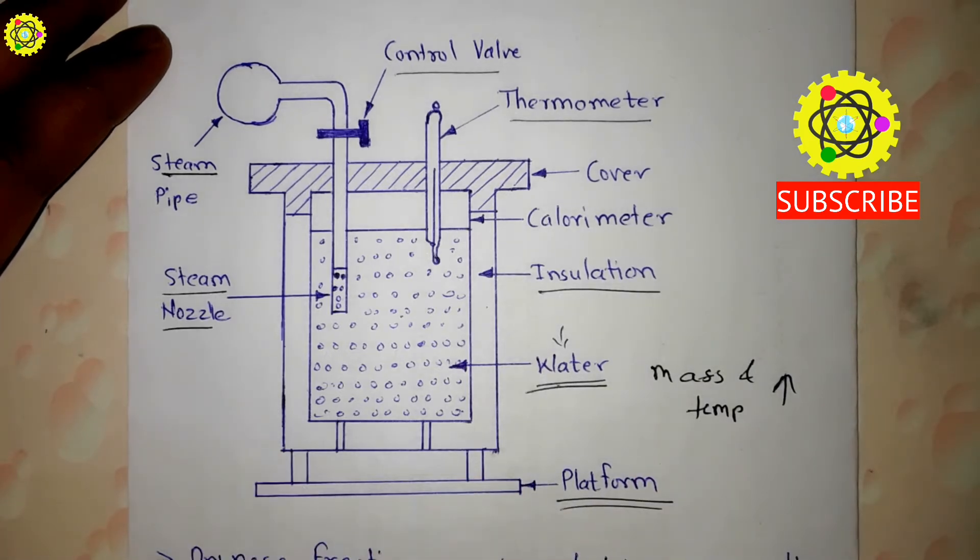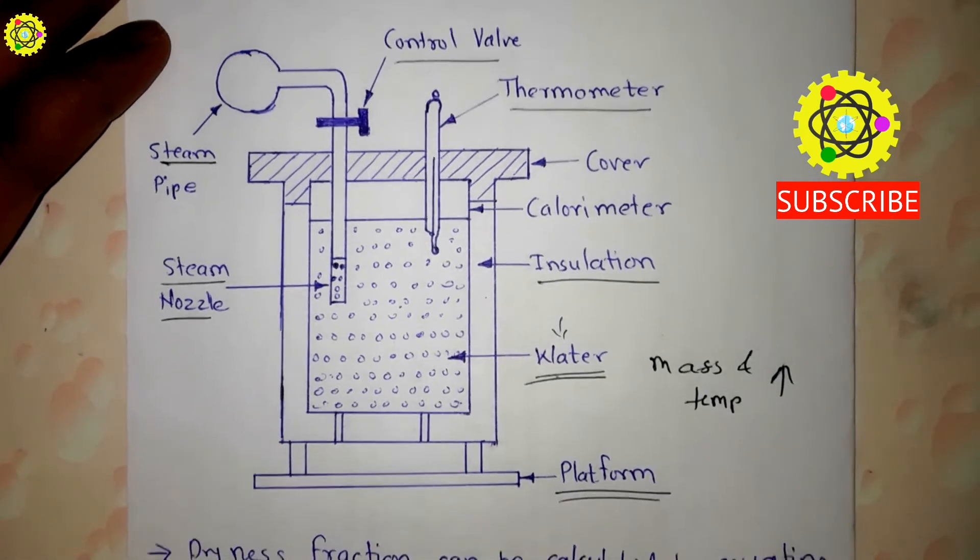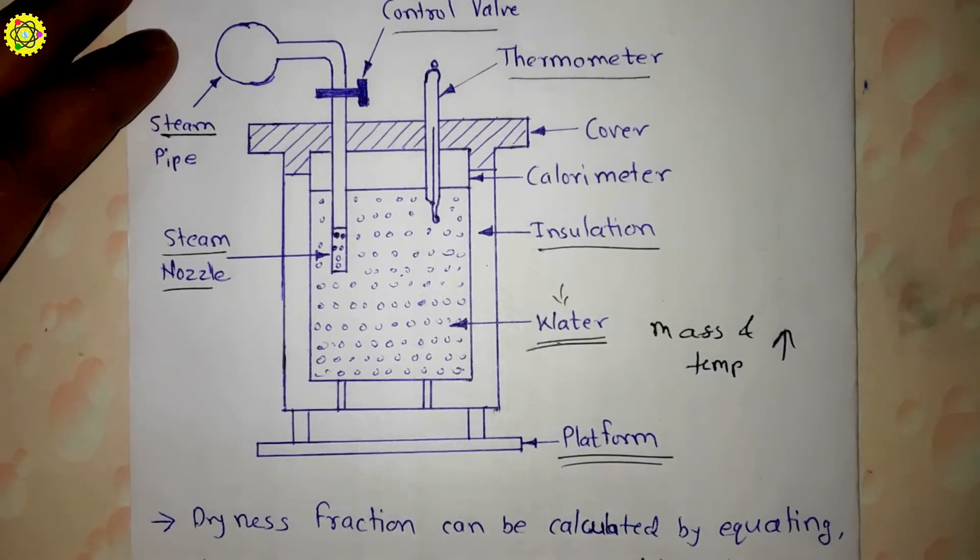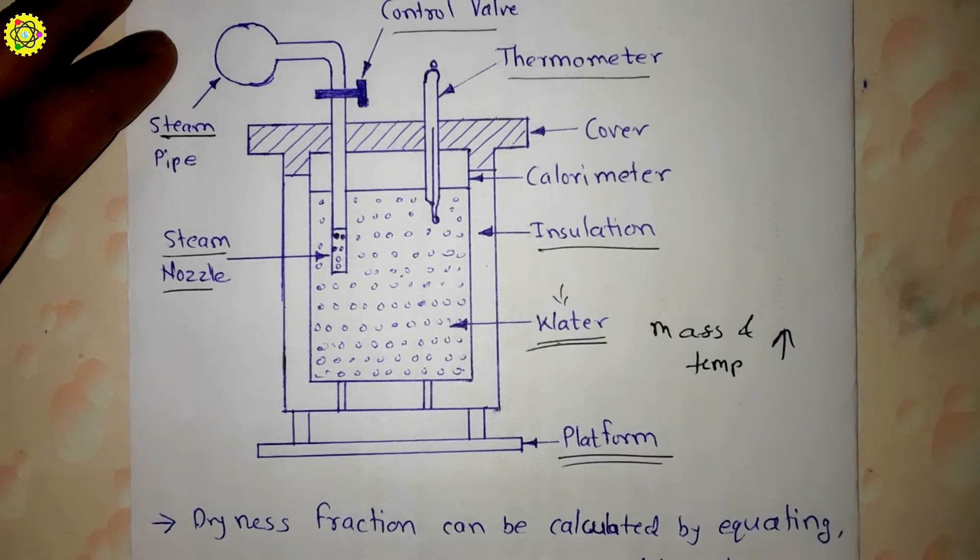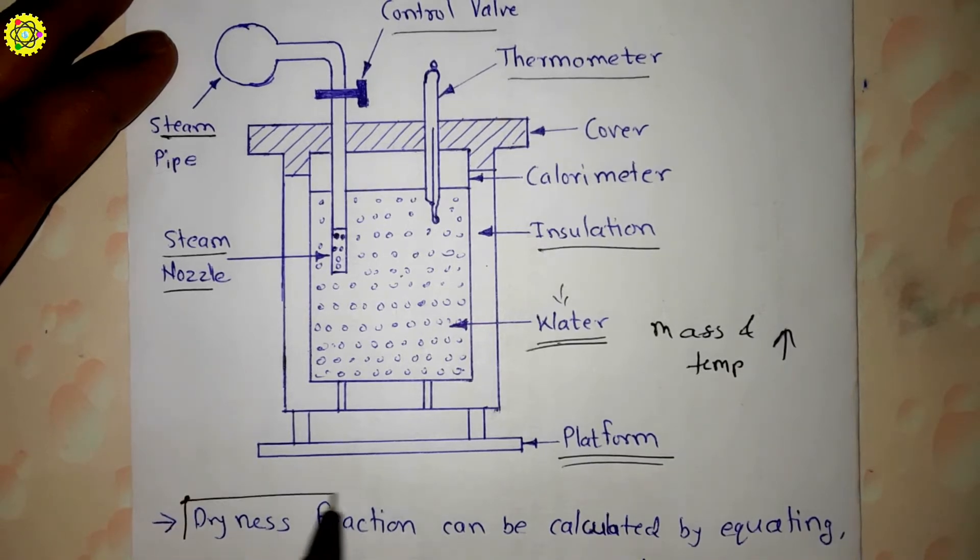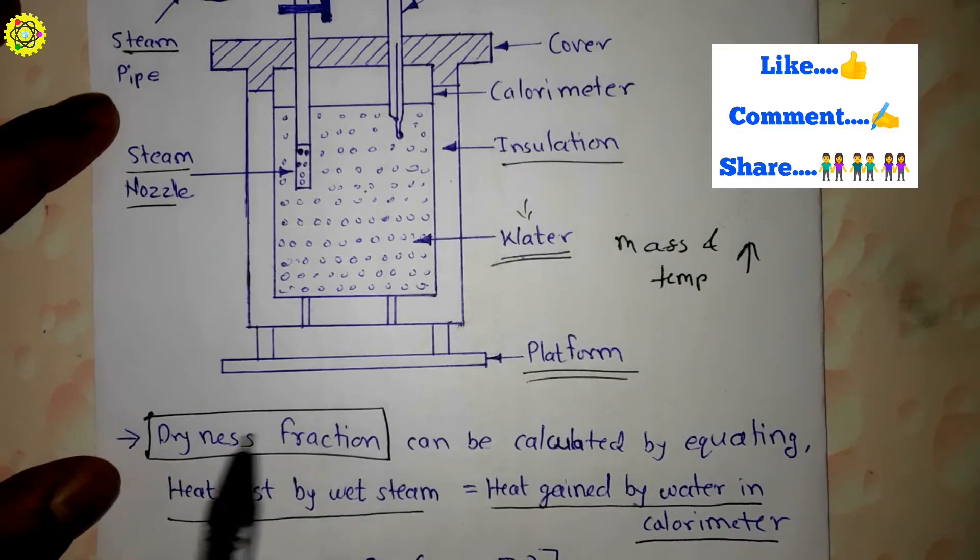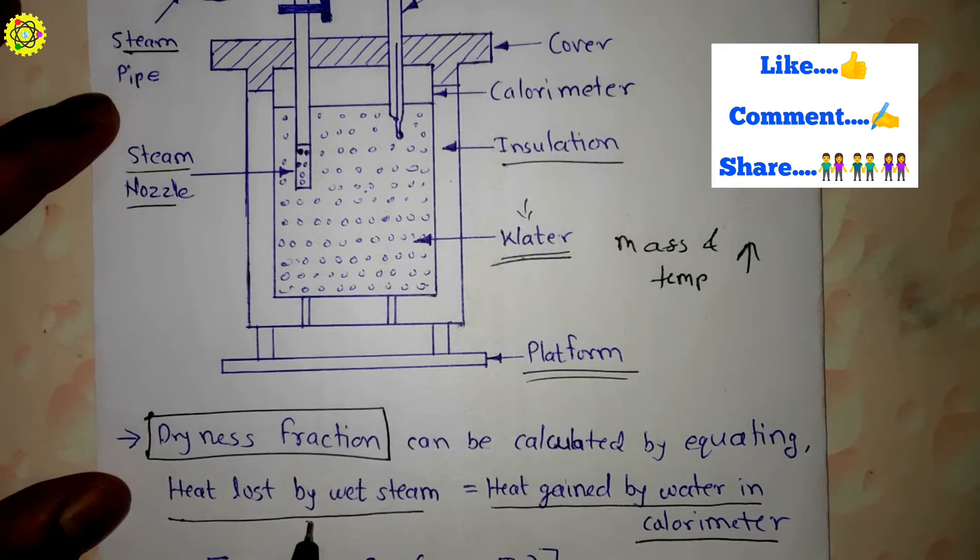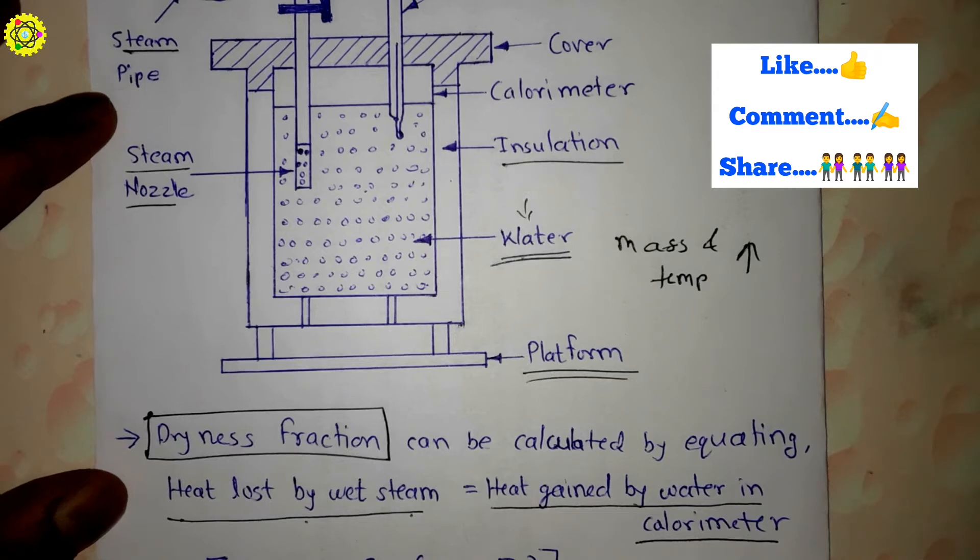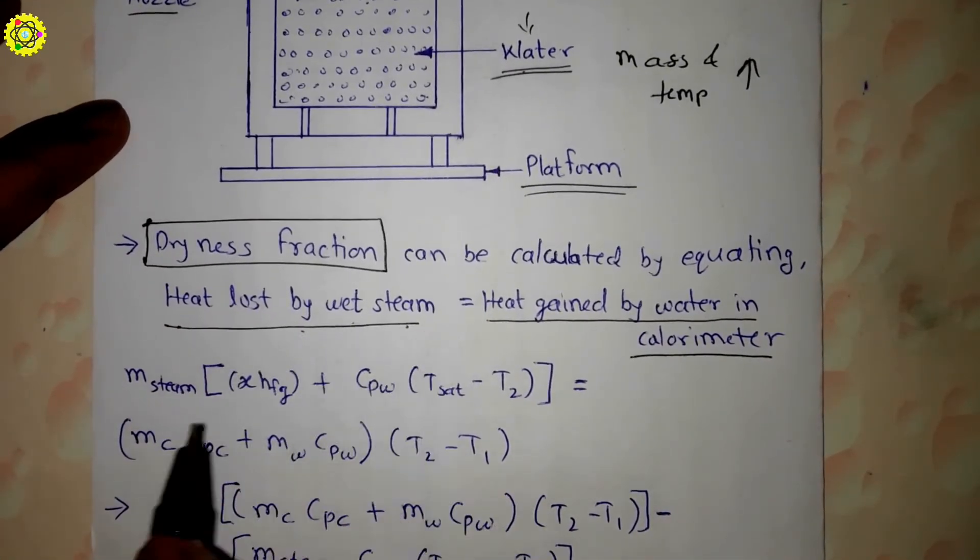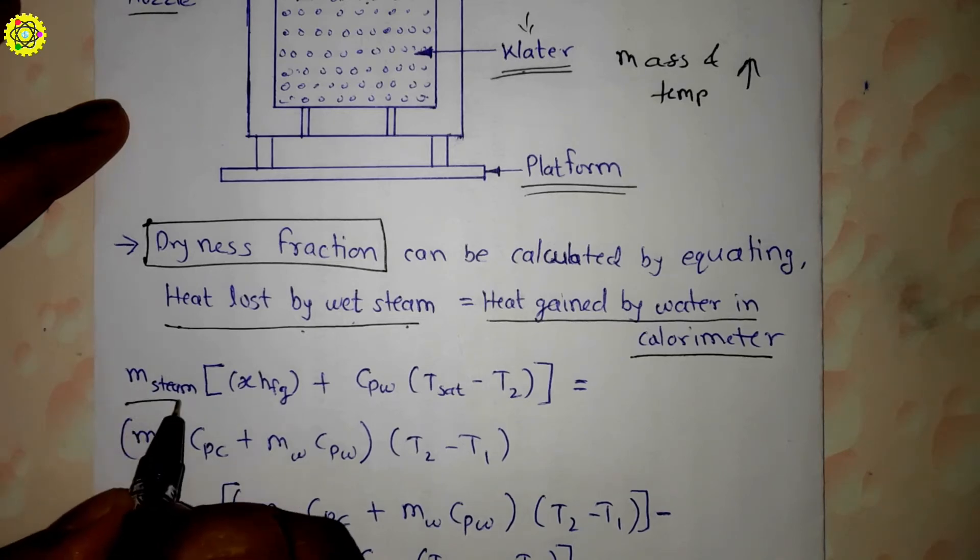In this process, heat is lost by the steam and heat is gained by the water. So we need to equalize the heat loss by steam and heat gain by water in calorimeter to calculate the dryness fraction.